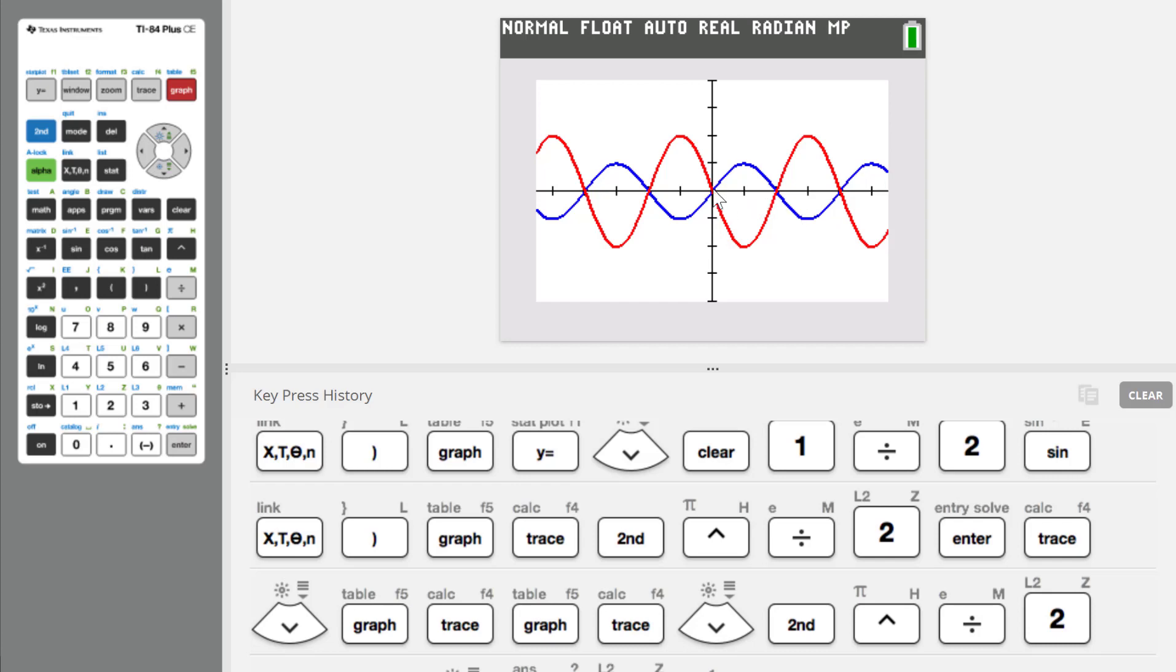I think you can see on here that the new amplitude is now 2. The old one was 1. The new amplitude is 2. The period, once again, has remained unchanged.